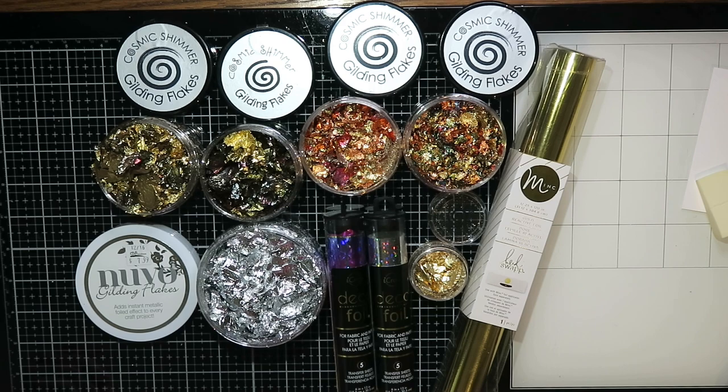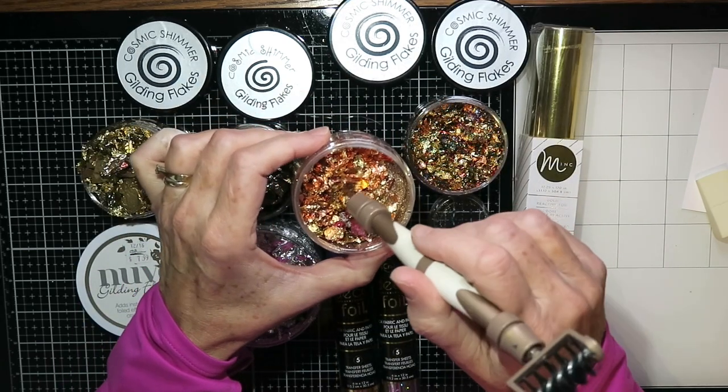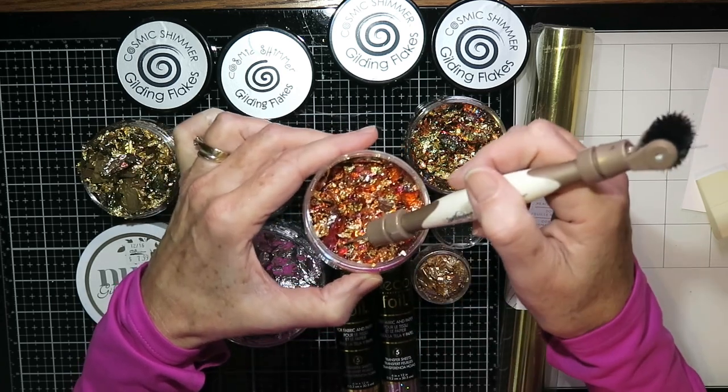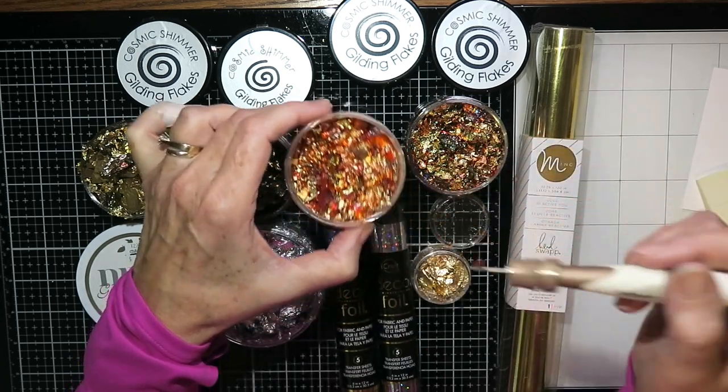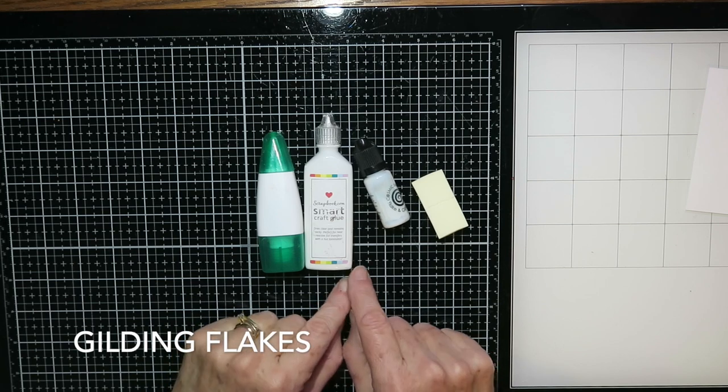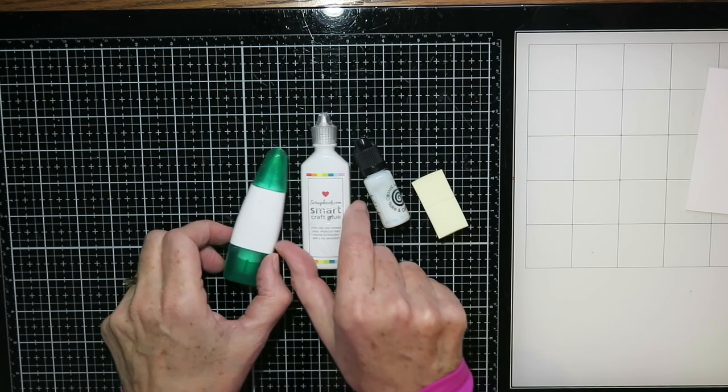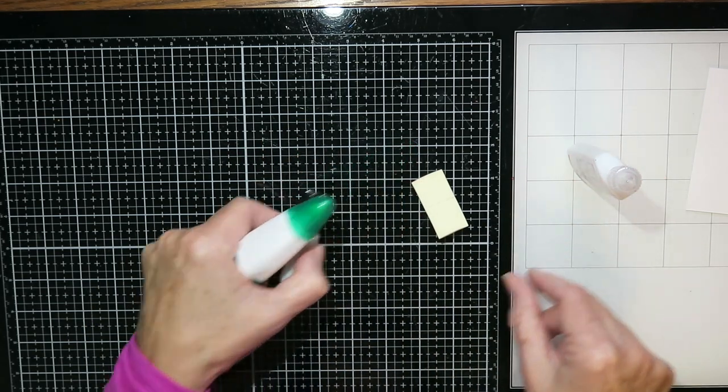Today's video is going to be all about foiling without using a hot foil machine, so that means gilding flakes and laminating foils. I personally love gilding flakes so I'm going to start with those. For the first technique you'll need a glue that dries tacky, so scrapbook.com glue will work, Cosmic Shimmer flake and glitter glue works very well, and Tombow Mono will also dry tacky.